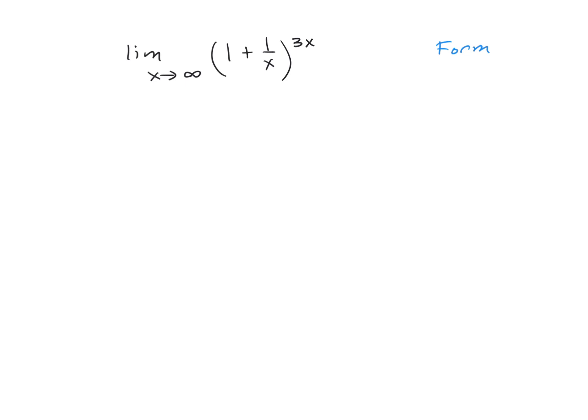So that's 1 plus something going to 0, which goes to 1. And then 3 times x is going to infinity since x is going to infinity. So it's the form 1 to the infinity power. You should notice that this is not one of the indeterminate forms of L'Hôpital's rule — it's not 0 over 0 or infinity over infinity.